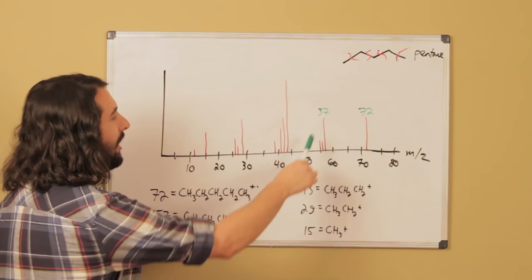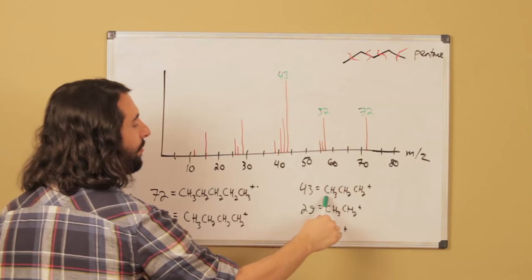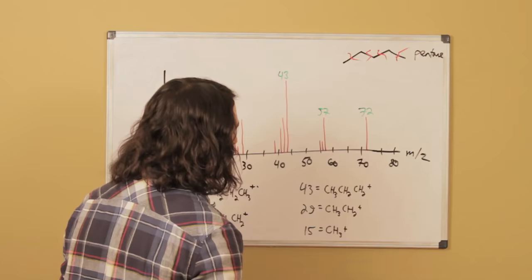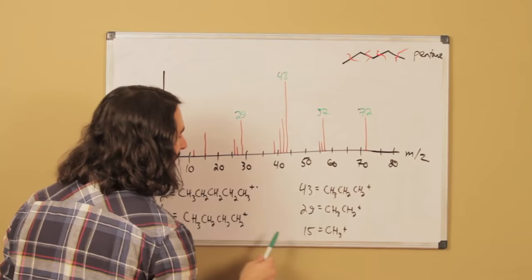Over here we've got 43, so 43 probably corresponds to the propyl cation. If we add up all the atomic masses we're going to get 43 for that. There we've got 29 right there and that could be the ethyl cation, and then we might get a good bit of the methyl cation which is going to be around 15.